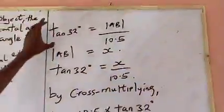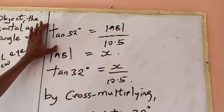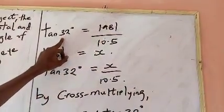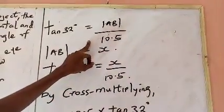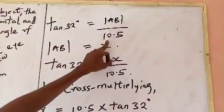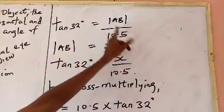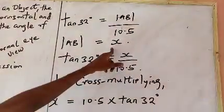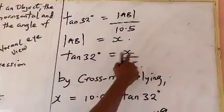We will be using tan 32 degrees from trigonometry. Tan theta is always equal to opposite over adjacent. Line AB is opposite to the angle 32 degrees, and the adjacent is 10.5. So we have tan 32° = AB / 10.5, which gives us tan 32° = X / 10.5.